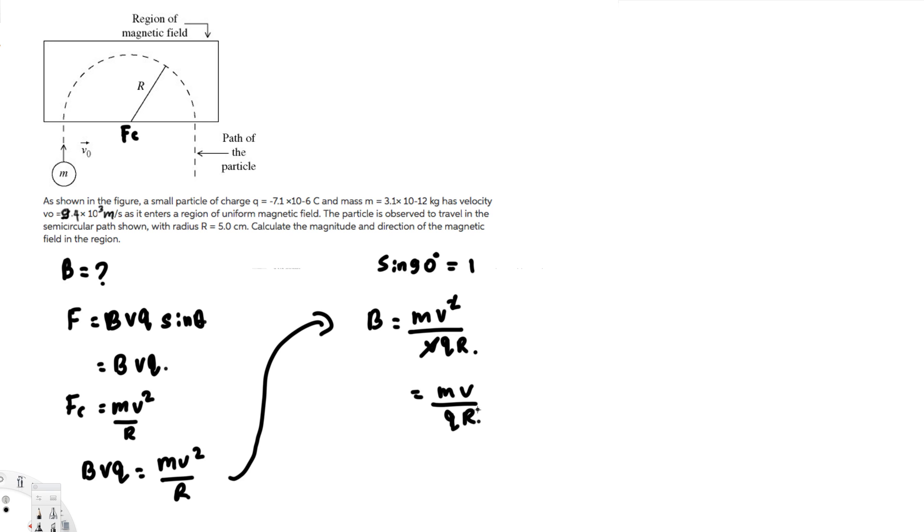Now we can find the magnetic field. We have the mass: 3.1 × 10^-12, times the velocity: 9.4 × 10³.